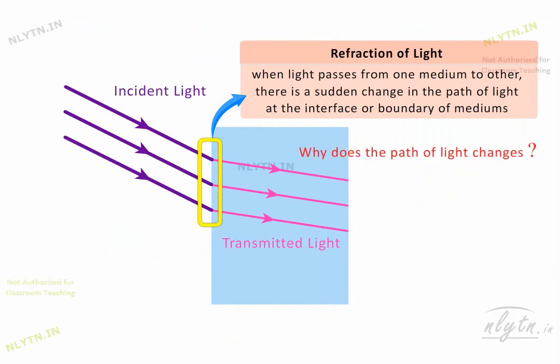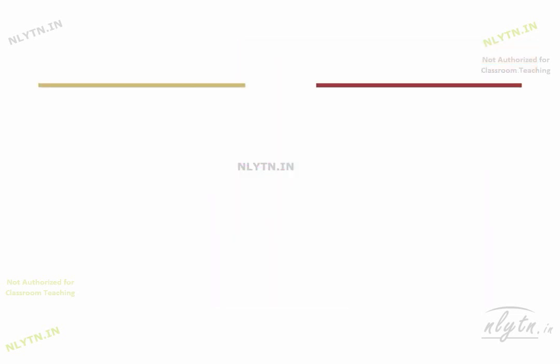But now, why does the path of light change at the boundary of two mediums? To understand this, let us recall our discussion from the chapter on mechanical waves, where we saw that the speed of a wave on a string depends on the linear mass density of the string. So for constant tension, speed on the string is inversely proportional to the linear mass density of the string.